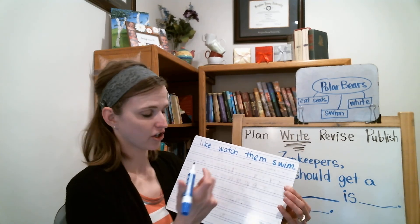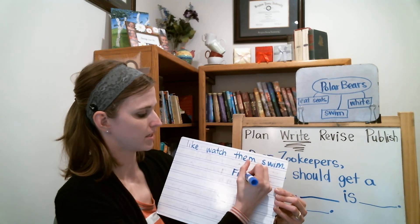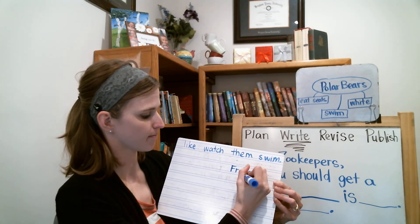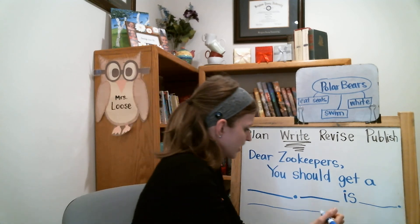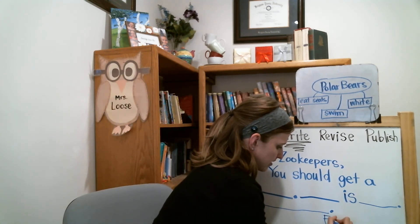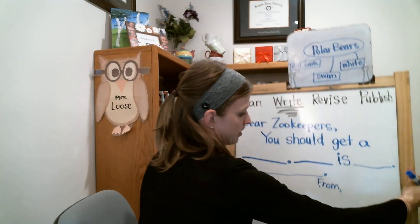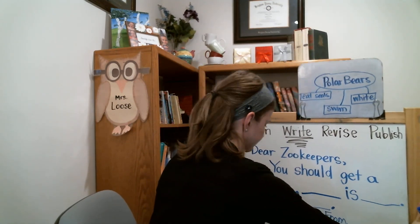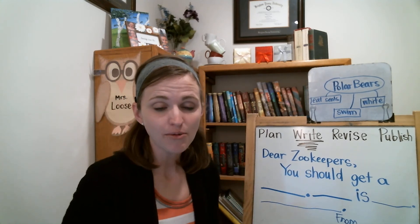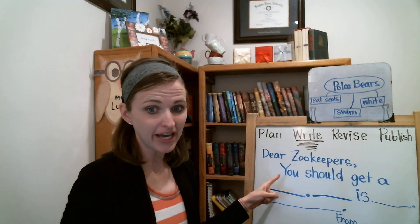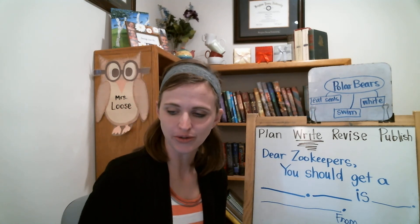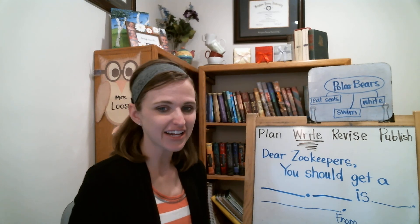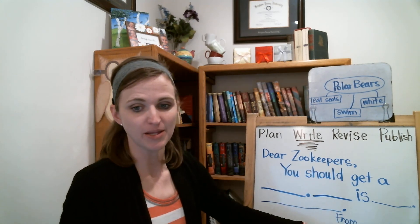Then you need to end your letter. We can end the letter with the word 'from.' I'll write 'From, Mrs. Luce.' You write 'from,' put that comma, and then write your name. So your letter should have: the animal you picked, a fact about the animal — you could pull one from your plan — and then a reason why the zookeepers should get that animal. Don't forget to address the letter to the zookeepers and write your name at the bottom.